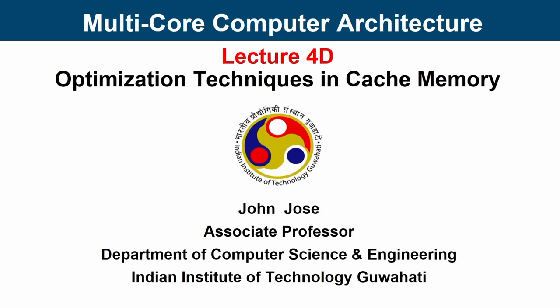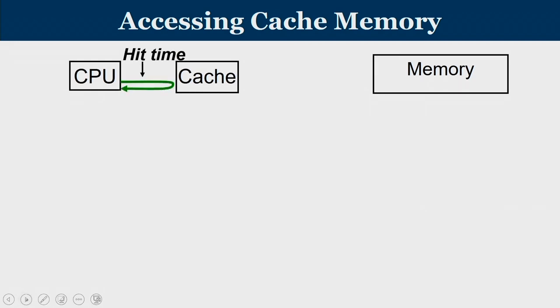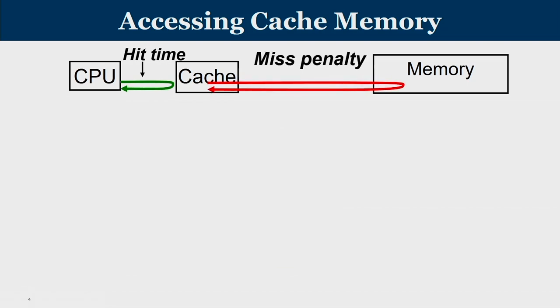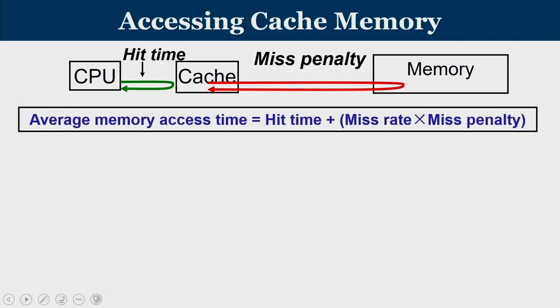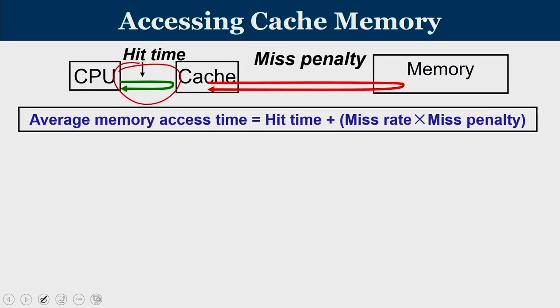In all these optimization techniques, our focus is how to reduce average memory access time. We know that when accessing cache memory, the CPU first tries to access the cache, and that is what is known as hit time. So the CPU refers to cache — that is hit time. And if it is a miss, then the extra time needed to go all the way to main memory and bring the data is called miss penalty. The green component in the AMAT diagram is present in all cases, whether it is a hit or a miss.